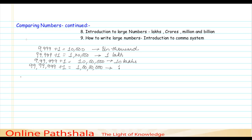This number is named as one crore. Same way, and so on, I can add one to 99 crores 99,99,999 to get 10 crores and so on. This was all about the naming system in the Indian system of numeration.